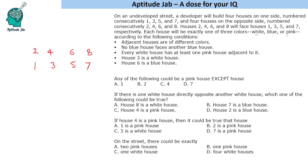There are certain conditions. First, adjacent houses must be of different colors. Second, no blue house faces another blue house — this condition applies only to blue; other colors like white can face each other. Third, every white house has at least one pink house adjacent to it. Fourth, house 3 is a white house and house 6 is a blue house.